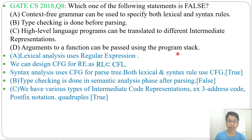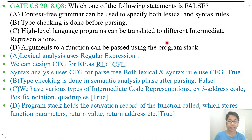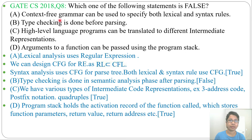Next, option D: arguments to a function can be parsed using the program stack. This is true — the program stack holds the activation record of the function called, which stores function parameters, return value, return address, etc. So arguments to a function can be parsed using the program stack. This is true.